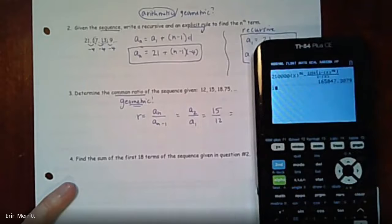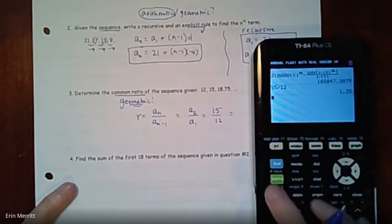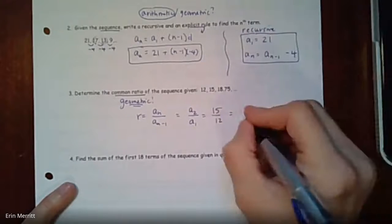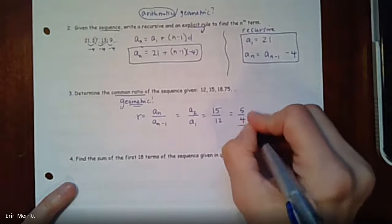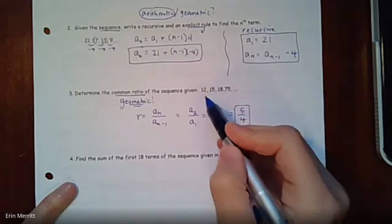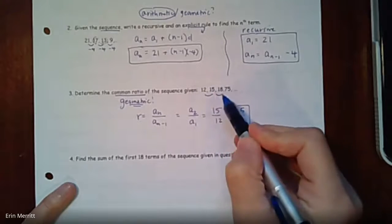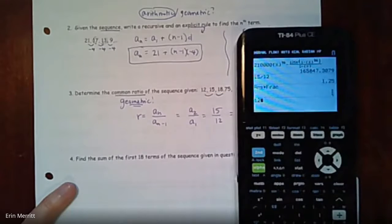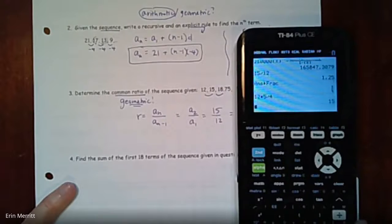You could have done that with any of the terms. 15 over 12 - feel free if you're not feeling your mental math, 1.25 would be fine. You could math frac and say 5/4. That's what you're multiplying by to get from one term to the next. If you wanted to check, you could say 12 times 5/4, yep that'll give me 15, and then times 5/4 and there's that 18.75.